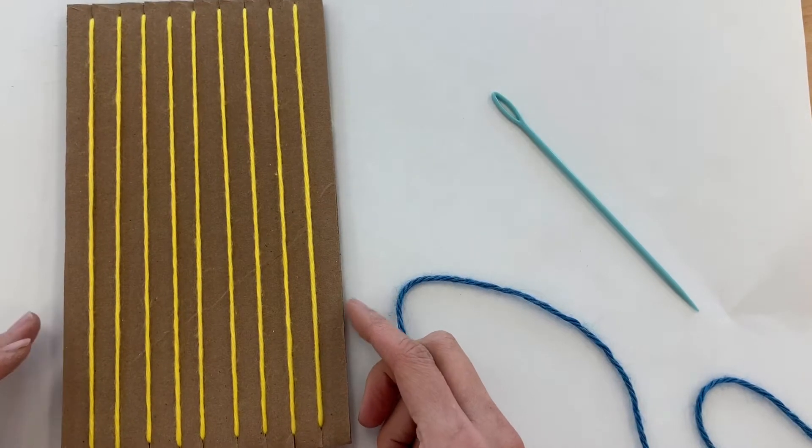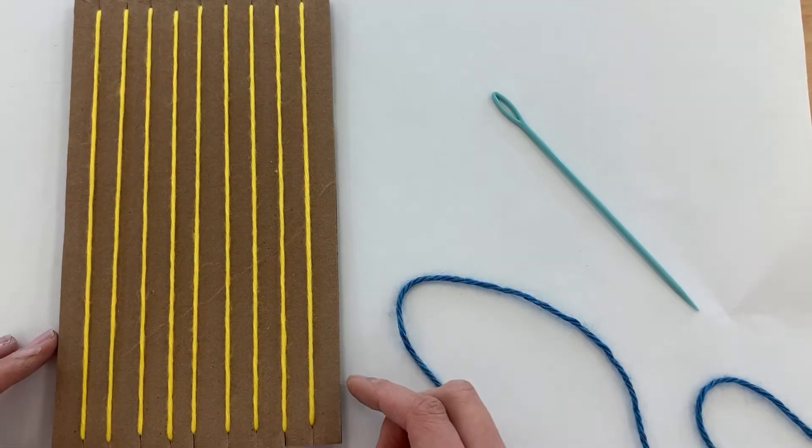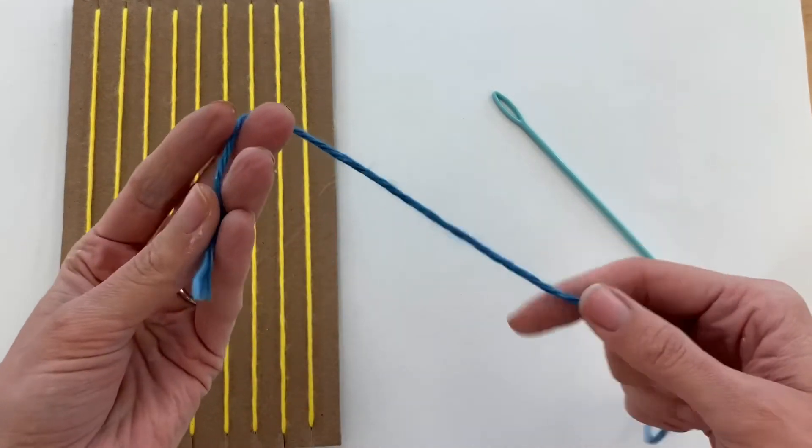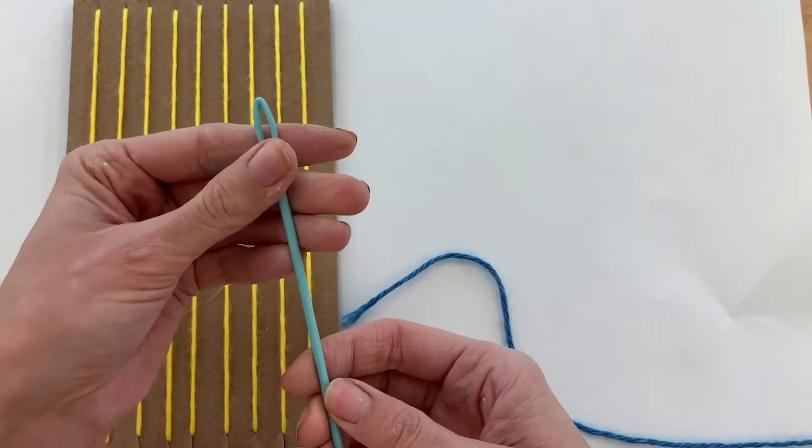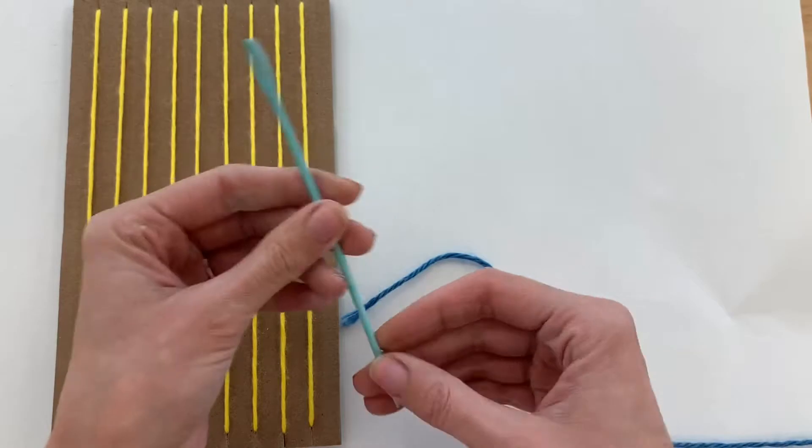Now that everything's set up, we can start with a tabby weave for this project. For that, we're first going to need to thread our needle. So we're going to need a piece of yarn, it's about two arm lengths long, and a weaving needle. So it's this long one right here.